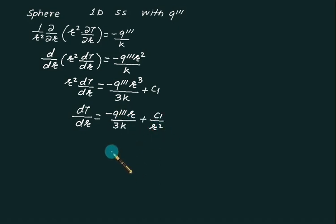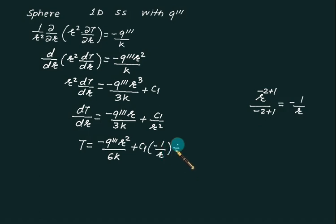So we will get T equal to minus Q triple dash R square by 6K plus C1, and integral of 1 by R square is minus 2 plus 1 upon minus 2 plus 1, which is minus 1 by R. So C1 is multiplied by minus 1 by R plus another constant equal to C2.